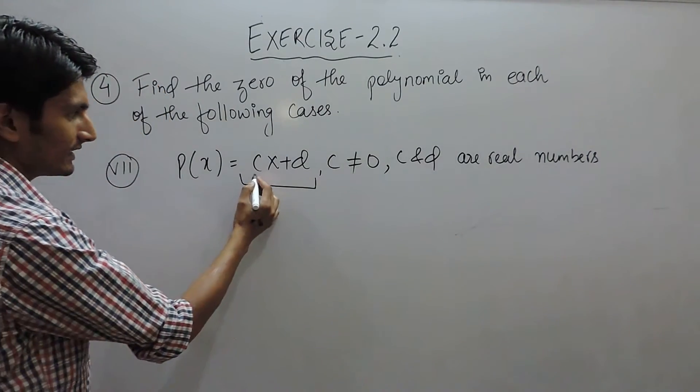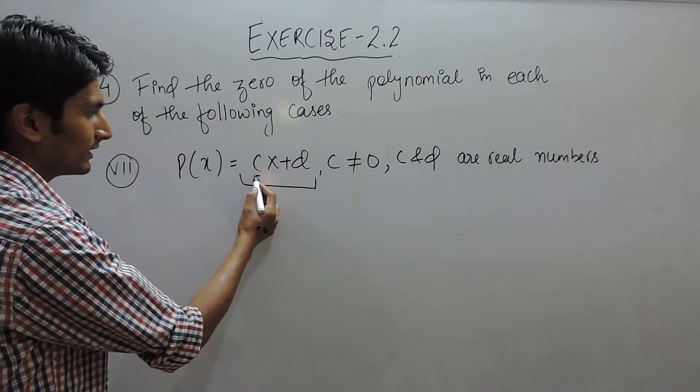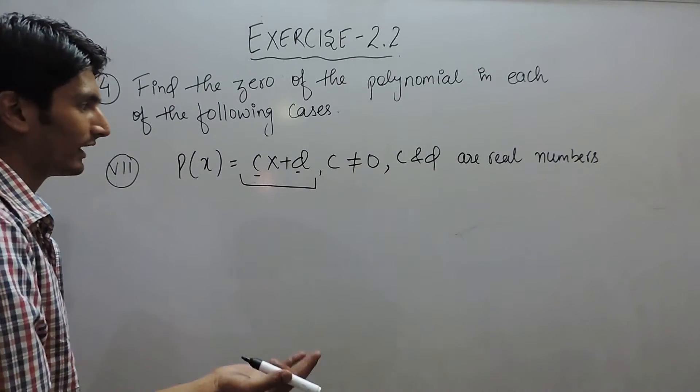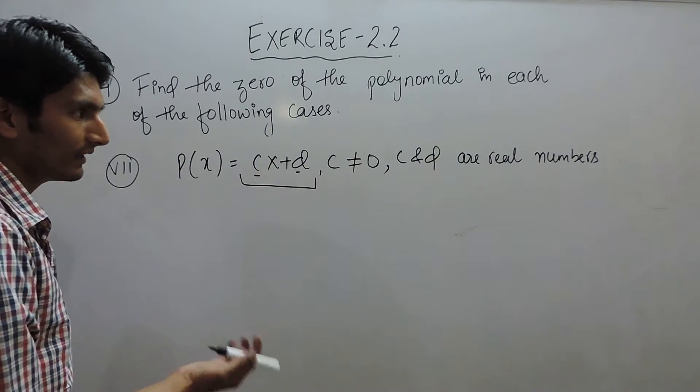In this case, c is not equal to 0, and c and d are real numbers, meaning the value of c and d can be anything like 3, 4, 5, or any other number, but the value of c is not equal to 0 and they are real.